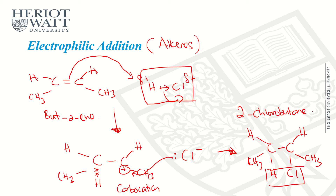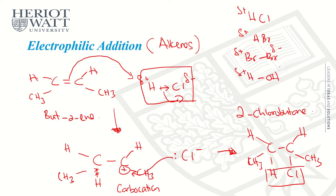So this is the detailed mechanism of electrophilic additions. This mechanism is applicable to all alkenes, and it depends on what type of electrophile you use. Types of electrophiles include, for example, HCl (delta positive H), HBr (delta positive H), Br2 (delta positive from one end), H2O (delta positive and delta negative), and H2 (delta positive). All these delta positive species can act as an electrophile and follow the same mechanism, giving you the respective products.